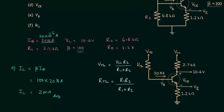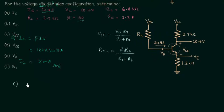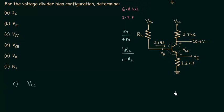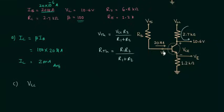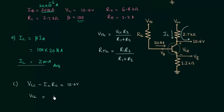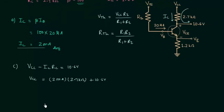Now we will solve Part C to calculate VCC by applying Kirchhoff's voltage law in the loop. We have VCC minus the drop IC times RC minus VC equal to zero. So VCC equals 2 milliamps times 2.7 kilo ohms plus 10.6 volts, giving VCC equal to 16 volts.